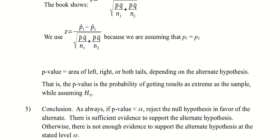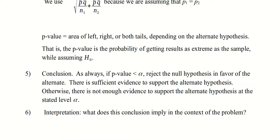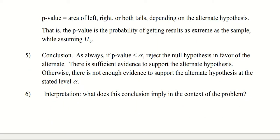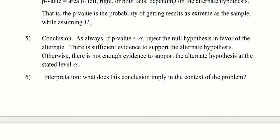We find our p-value with the calculator. We need to know whether it's a left- or right-tailed test, which we determine when we state the alternative hypothesis. The conclusion, as always: if the p-value is less than alpha, we reject the null hypothesis in favor of the alternative and say there is sufficient evidence to support the alternative hypothesis. Otherwise, we say there is not enough evidence to support the alternative hypothesis, at that stated level of alpha. The interpretation should be stated in real English so it's clear what the results are telling you.